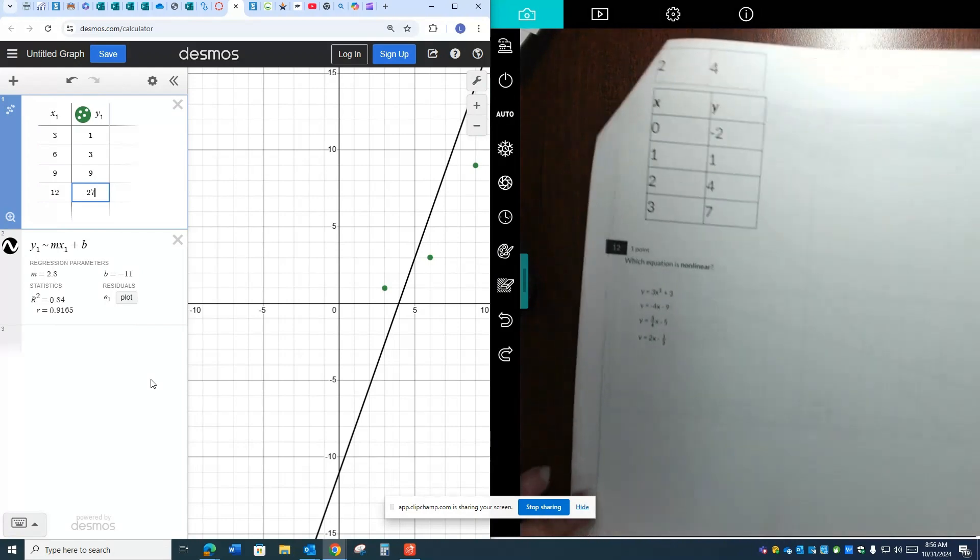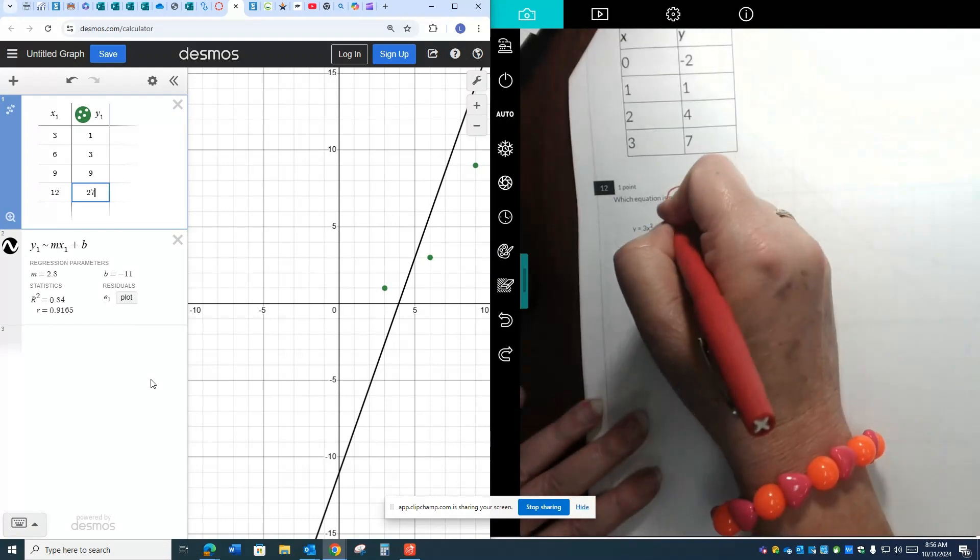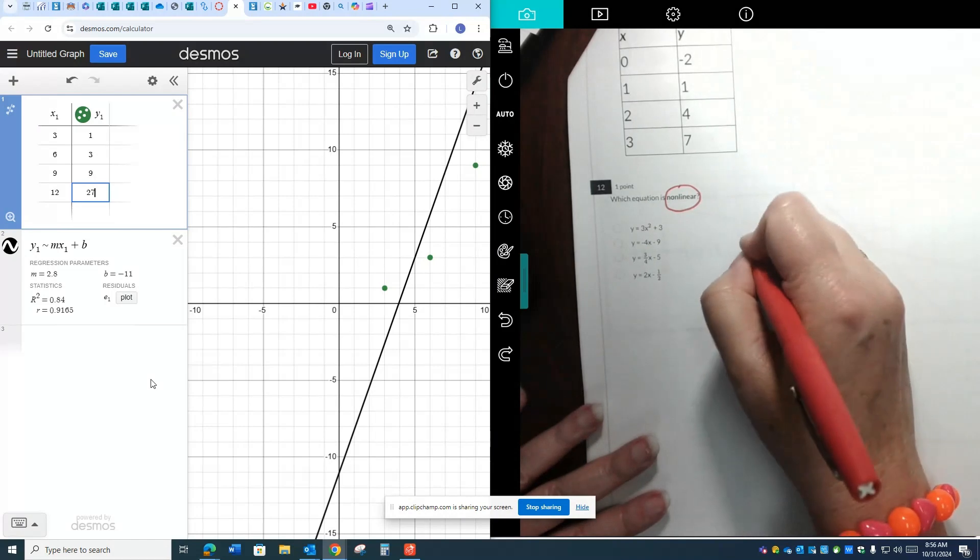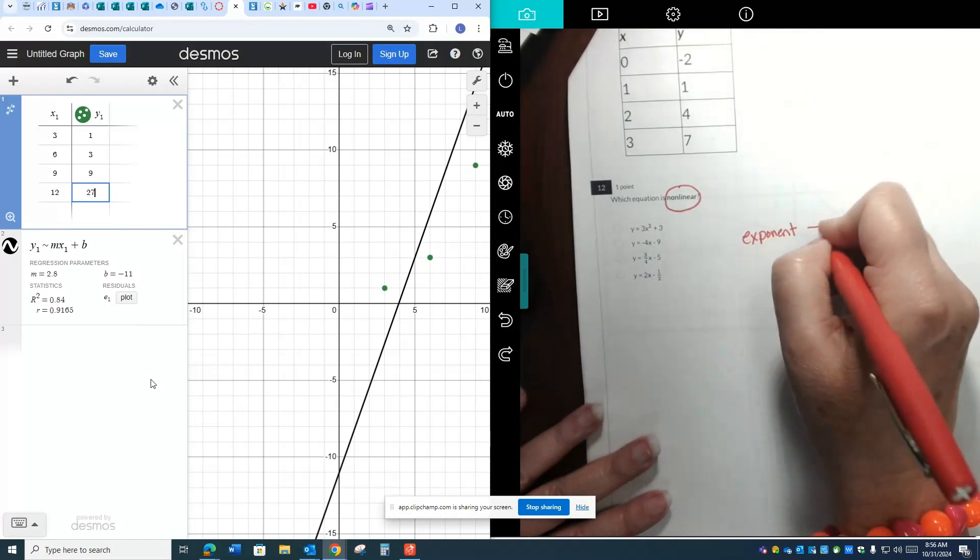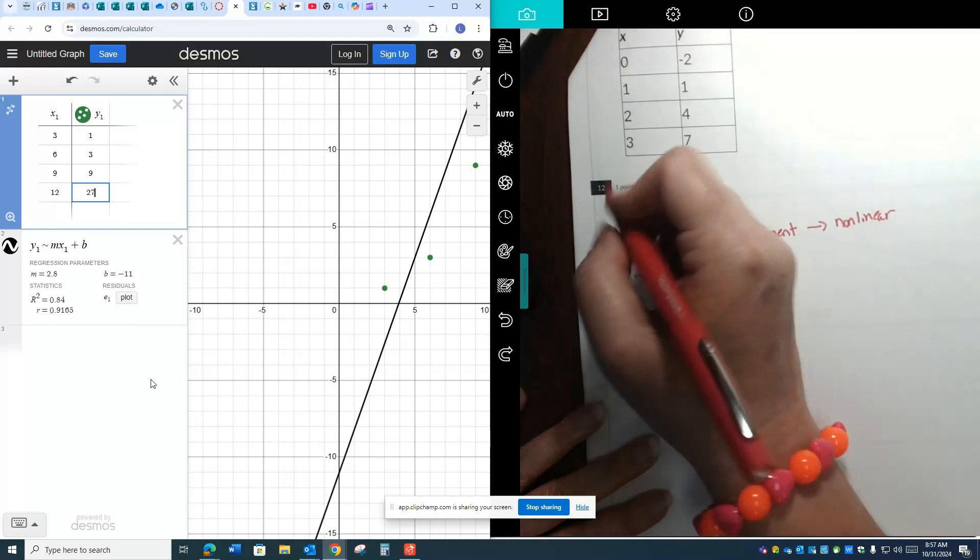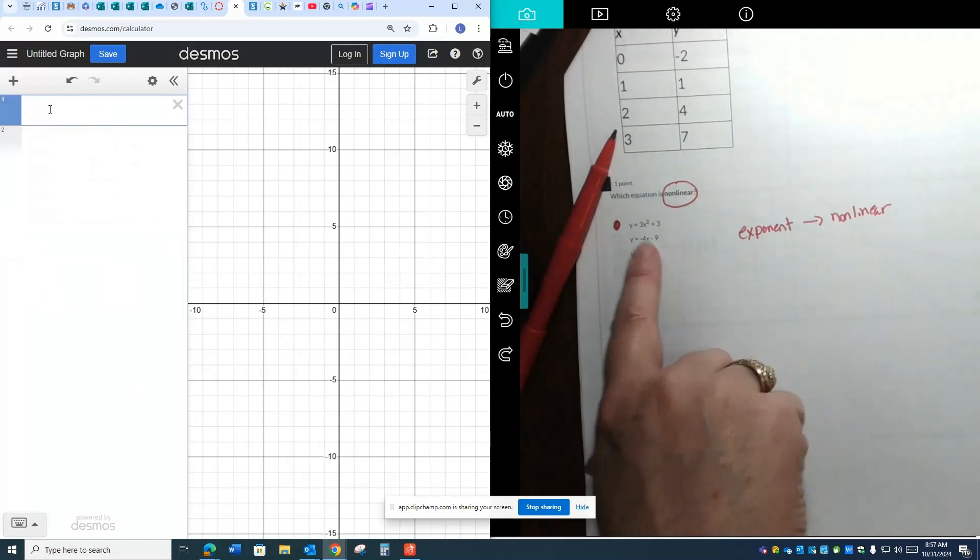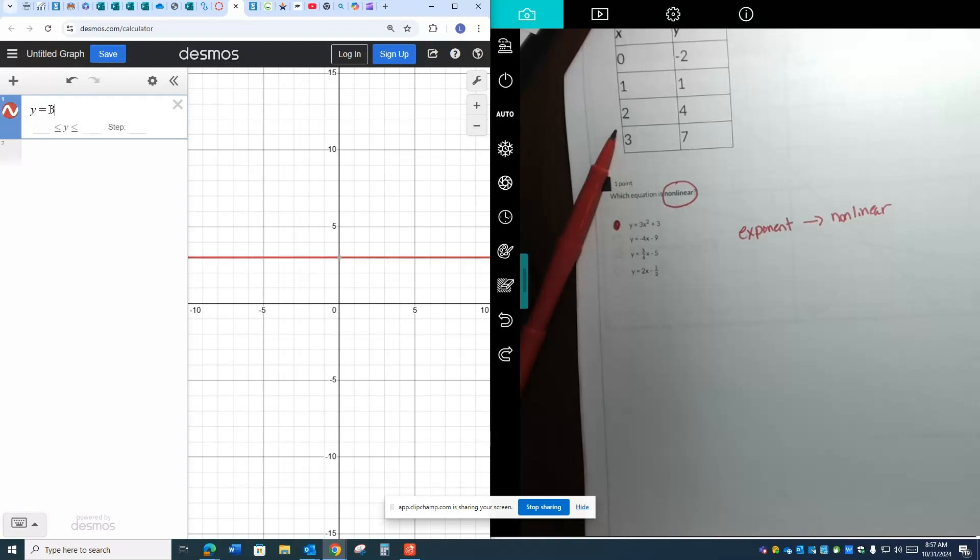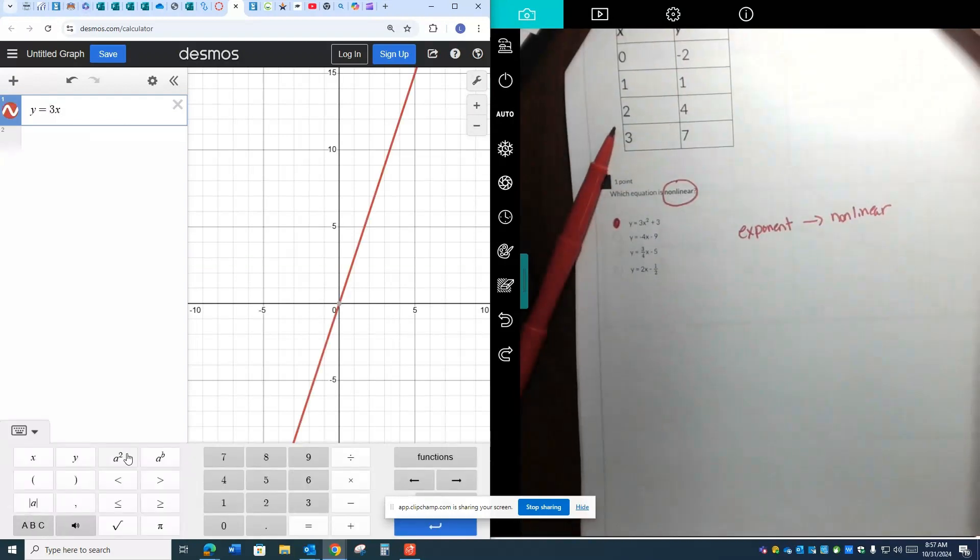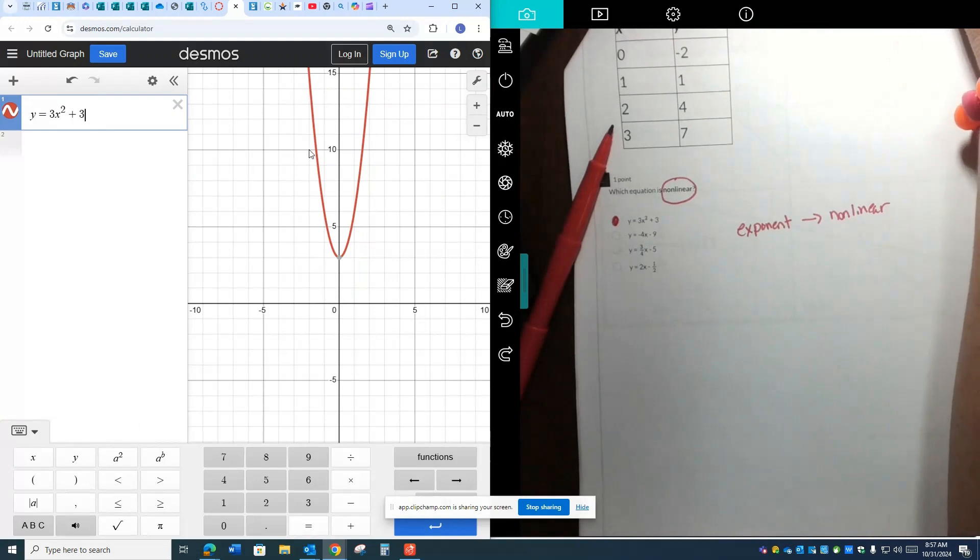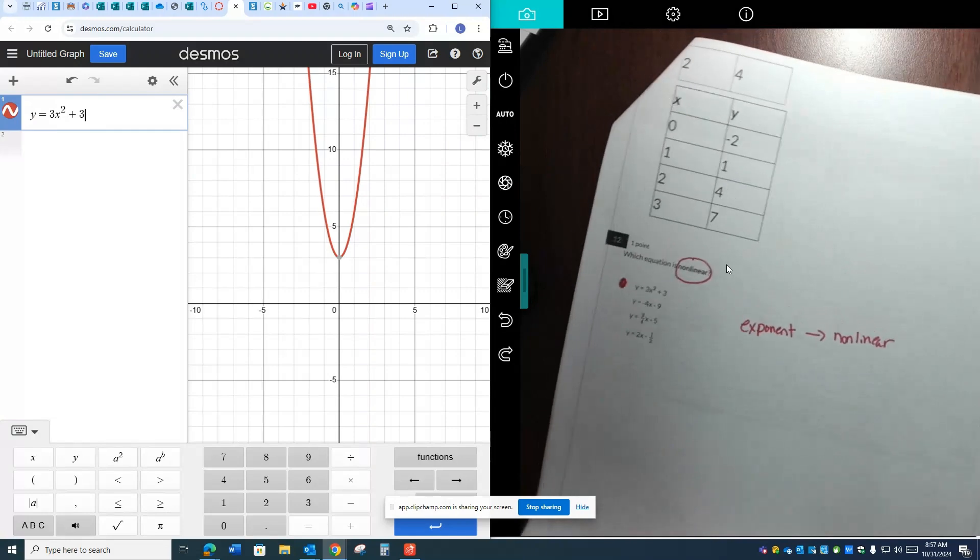All right. Number 12. Which equation is nonlinear? The thing I want you to remember about this one, the easiest way to tell is if there's an exponent, it's nonlinear. If you see an exponent, that's your dead giveaway that it is going to be nonlinear. But we can use Desmos to prove it. I'm just going to type in this equation, y equals 3x squared and then plus 3. See the graph? It makes this little U shape. It's called a parabola. You'll talk about that next year. But anytime you see an exponent, it doesn't matter what the exponent is, these little numbers up here, that is nonlinear.